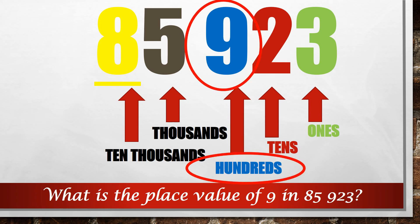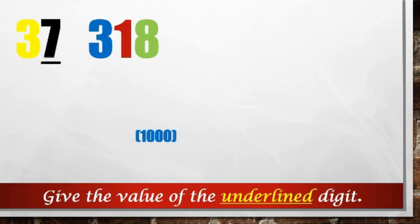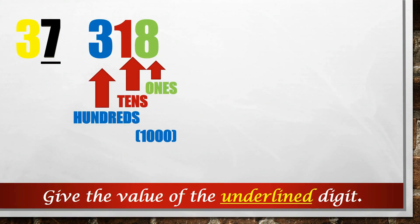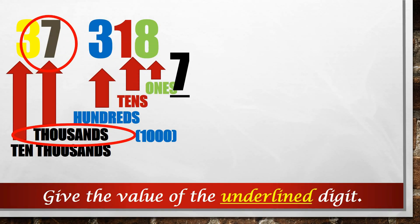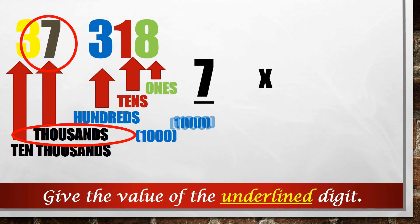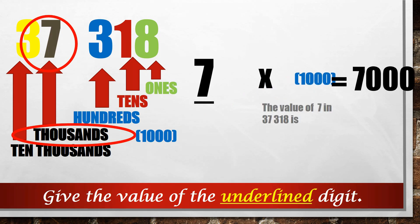Number 3: Give the value of the underlined digit. Ones, tens, hundreds, thousands, ten thousands. The underlined digit is 7, and its place value is thousands. So, 7 times 1,000 is 7,000. The value of 7 in 37,318 is 7,000.